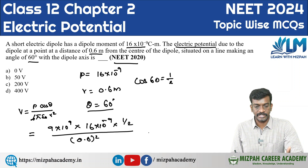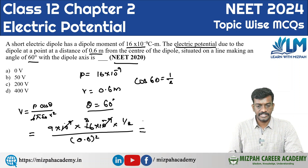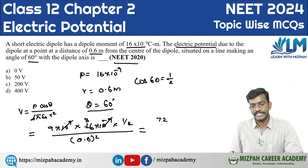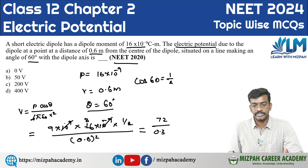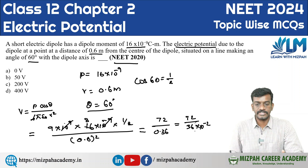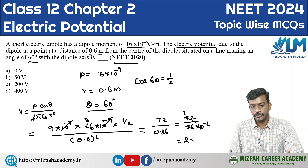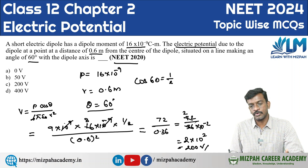Now let's simplify. 16 divided by 2 gives us 8. 10 to the power 9 and 10 to the power minus 9 cancel each other. So we have 9 into 8 = 72, divided by 0.6 squared which is 0.36, that is 36 into 10 to the power minus 2. So 72 divided by 36 gives 2, and 2 into 10 to the power 2 gives us 200 volt.